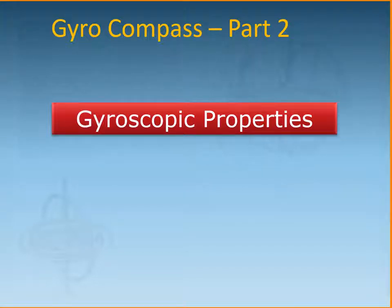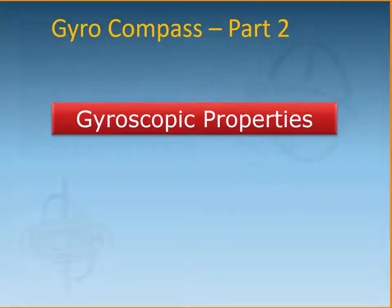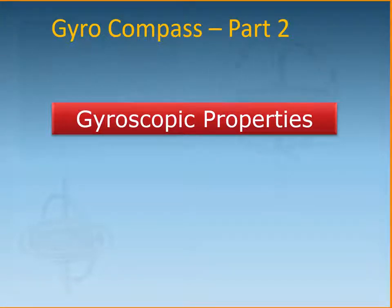In today's video we will be talking about the gyroscopic properties, specifically the property of rigidity in space — or gyroscopic inertia — and the property of precession. Once you understand the properties of a gyroscope, then in the third part of the video series I can tell you how these properties are used to convert a gyroscope into a gyrocompass.